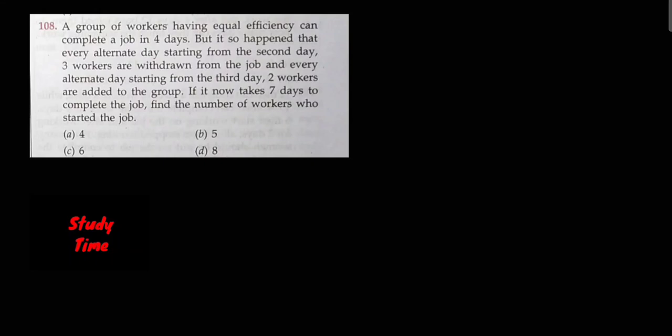Let the number of workers who started the job be n. Then n workers' one day work is 1/4n. One worker's one day work is 1 upon 4n.